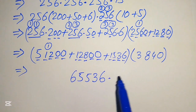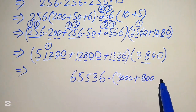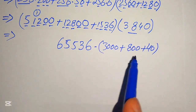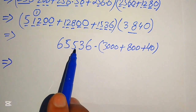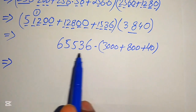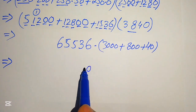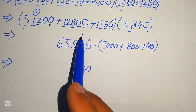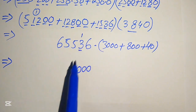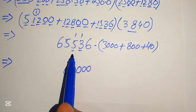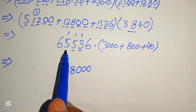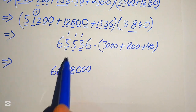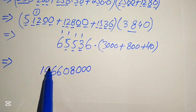Now we multiply 65,536 by 3840. We break 3840 as 3000 plus 800 plus 40. For 65,536 times 3000, we write three zeros and multiply by 3: 3 times 6 is 18, write 8 carry 1; 3 times 3 is 9, plus 1 is 10, write 0 carry 1; 3 times 5 is 15, plus 1 is 16, write 6 carry 1; 3 times 5 is 15, plus 1 is 16, write 6 carry 1; 3 times 6 is 18, plus 1 is 19.